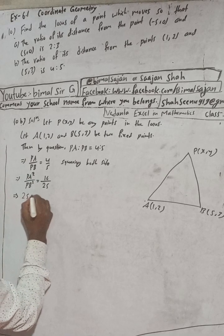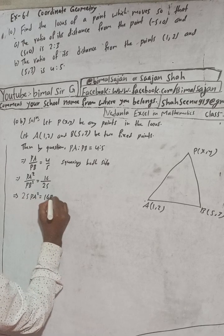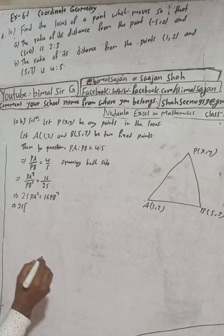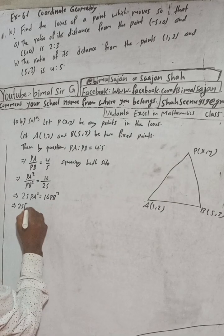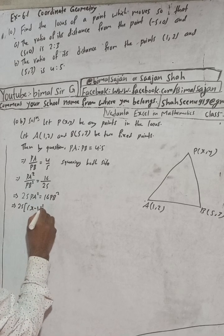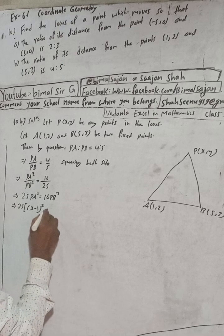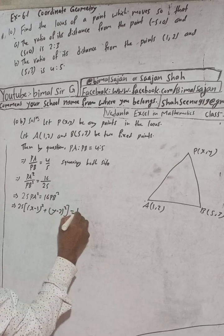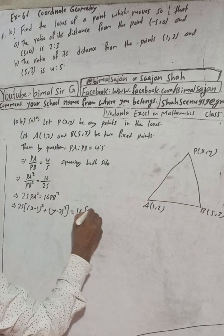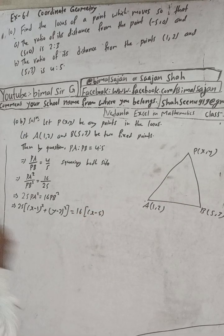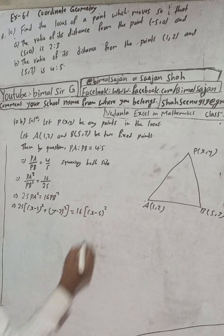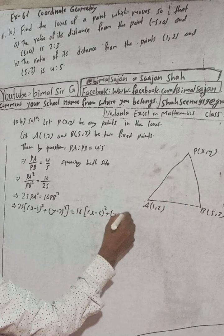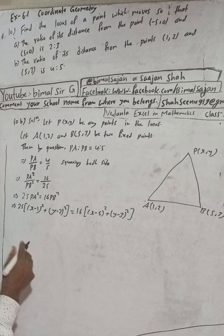Now we can write 25[(x-1)² + (y-2)²] = 16[(x-5)² + (y-3)²].